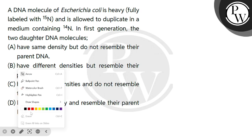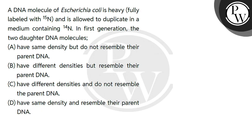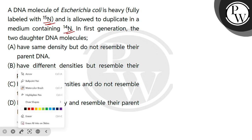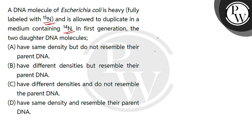Let's read the question. First, the question says the DNA molecule of E. coli is heavy. So, the DNA molecule of E. coli is heavy and labeled with 15N, and is now allowed to duplicate in a medium containing 14N. In the first generation, the two daughter DNA molecules — we have asked about the E. coli heavy DNA labeled 15N that was duplicated in 14N.